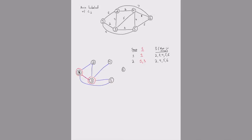The cheapest blue arc leaving node 1 is arc 1-5 at a cost of 4. The cheapest blue arc leaving node 3 goes from 3 to 5. So we select node 5 to bring into the MST because arc 3-5 is the cheapest arc going from S to S-bar. We include node 5 into the MST using arc 3-5.